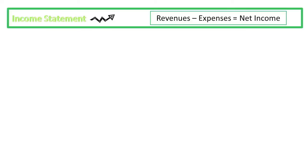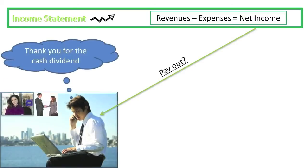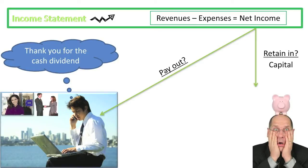The summarized income statement equation is: net income equals revenues minus expenses. The net income that a company earns must either be paid out to the owners or retained in the business on behalf of the owners. Income retained in sole proprietorships or partnerships will be retained in accounts called capital. Income retained in corporations, rather than being paid out as dividends to shareholders, will be retained in an account called retained earnings.